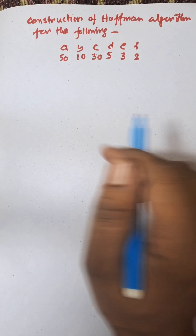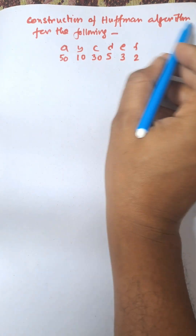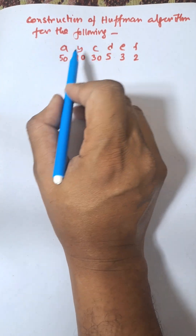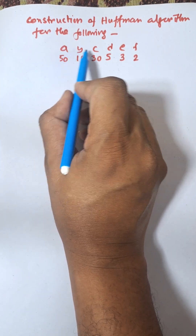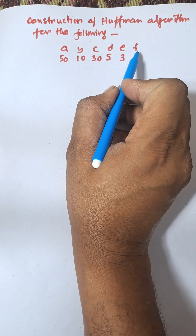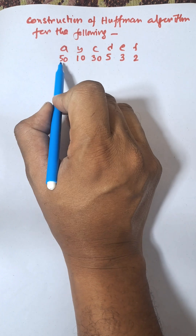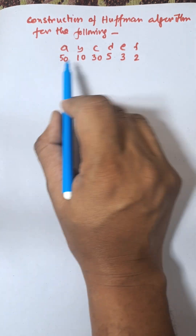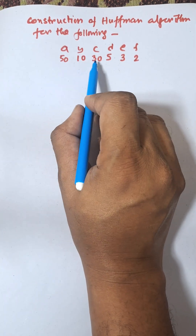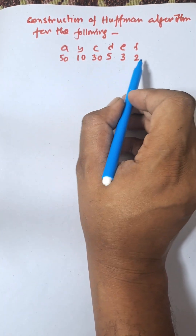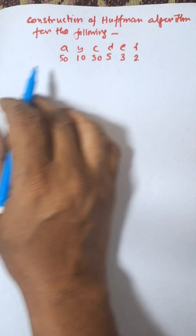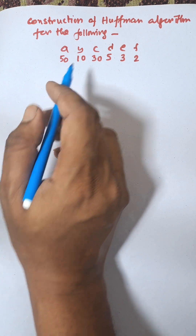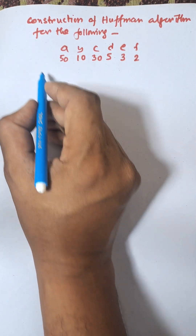Hey everybody, I am going to construct the Huffman algorithm for the following. Letters A, B, C, D, E, F are there and the frequencies of the letters are 50, 10, 30, 5, 3, 2. We need to construct a Huffman tree using the Huffman algorithm.